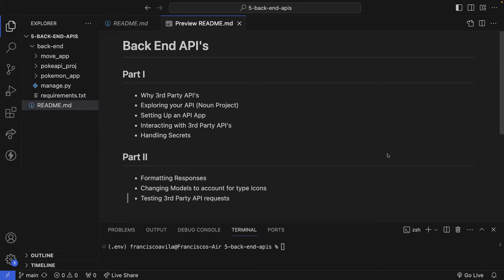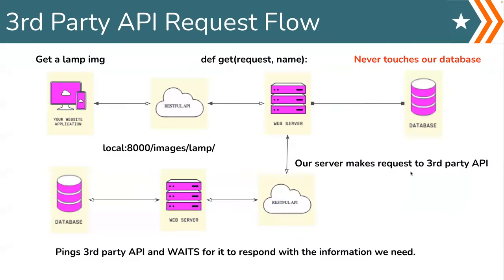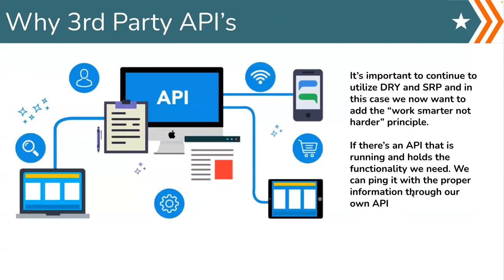Just a friendly reminder: if anybody has questions at any point in the lesson, please raise your hand or send your question on the Whiskey questions channel. So, third-party APIs — why third-party APIs? It's important to continue to utilize the DRY and SRP concepts, and in this case we want to add the 'work smarter, not harder' principle. If there's already an API handling the information we need, why make that functionality ourselves?